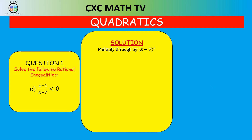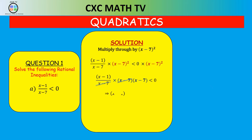When you multiply both sides by X minus seven all squared, note that X minus seven squared is X minus seven times X minus seven. One X minus seven from the denominator cancels with one from the numerator, and zero times anything is zero, so we end up with X minus one times X minus seven less than zero.